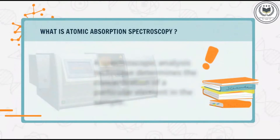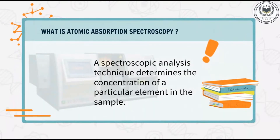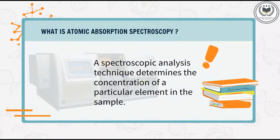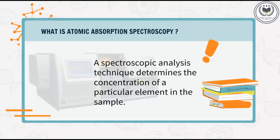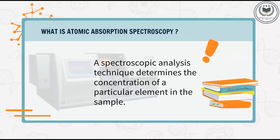Atomic Absorption Spectroscopy, or AAS, is a spectroscopic analysis technique that determines the concentration of a particular element in a sample. It detects elements in either liquid or solid samples through the application of characteristic wavelengths of electromagnetic radiation from a light source.